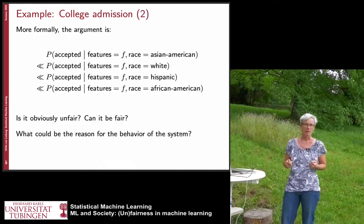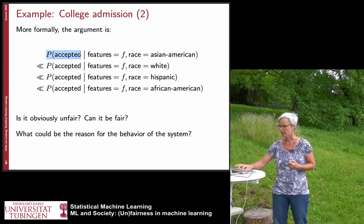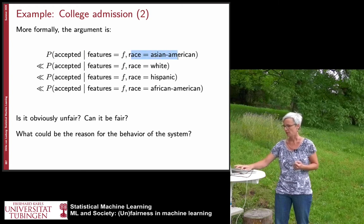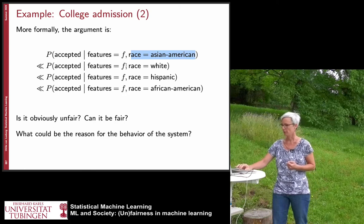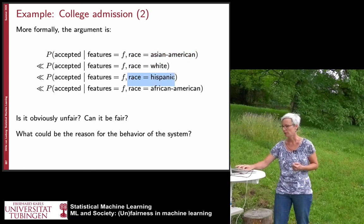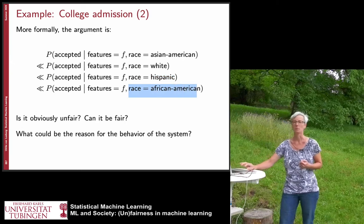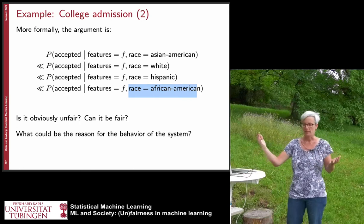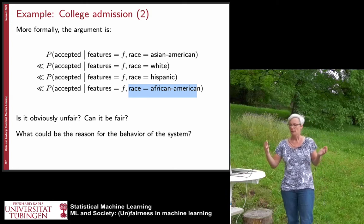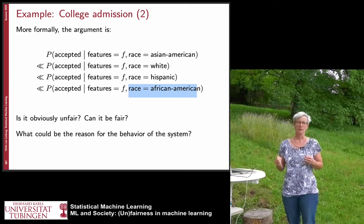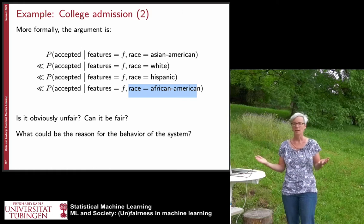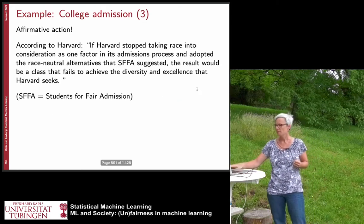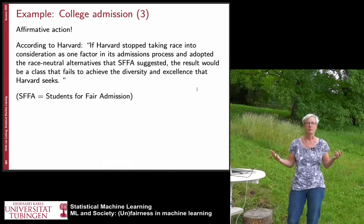More formally, the probability of being accepted given certain features and race Asian-American is smaller than if the race is white, which is smaller than Hispanic, which is smaller than African-American. The people who complained took this to court proceedings and found it very unfair, but from another point of view it can be called fair. This is really the debate about affirmative action — similar to debates about gender imbalance and whether to force companies to have more women in their highest-ranking management positions.